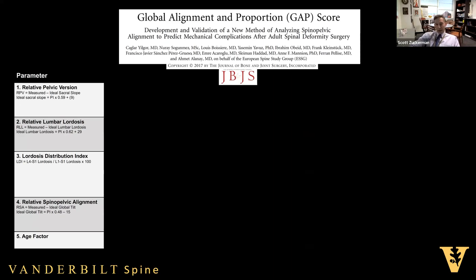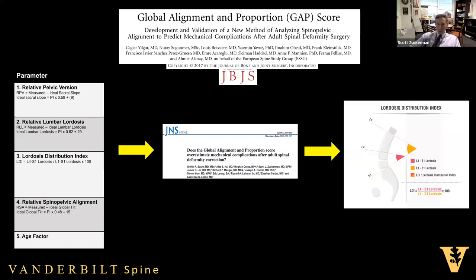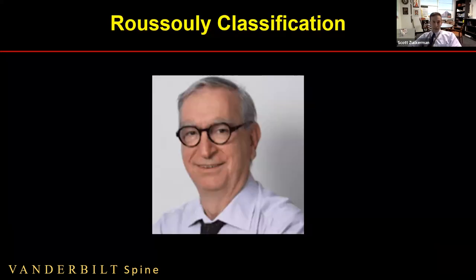Five years later came the GAP score, which a lot of people thought would be the magic bullet. It has important principles but papers like Griffin Baum's showed it may overestimate complications or not be as useful as we think. The key takeaway from the GAP score was LDI — lumbar dose distribution index — where our lower doses should be L4 to S1, about 35 to 40 degrees, and about two-thirds of our lordosis should come from L4 to S1.